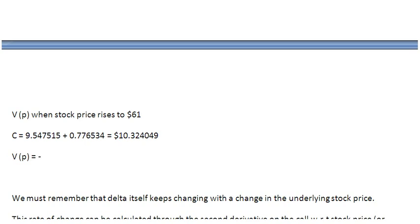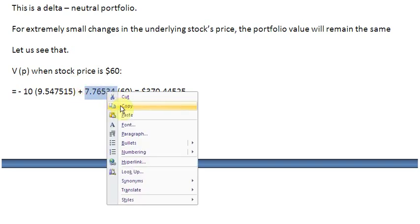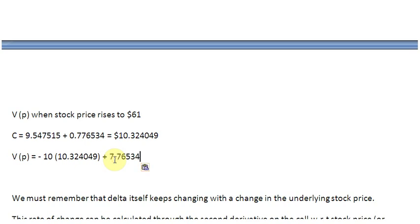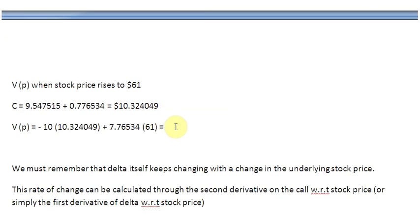When we carry out this calculation, we find that the value of the portfolio is exactly the same as before — $370.44525. You can verify that on your calculators. So the delta neutral portfolio has successfully hedged our position for this small change in stock price.